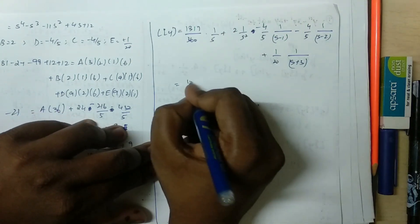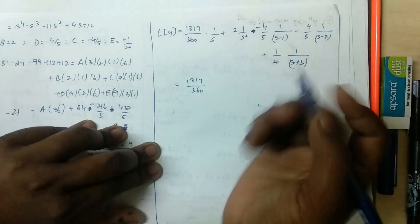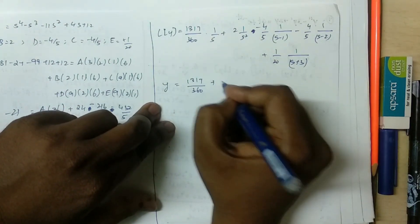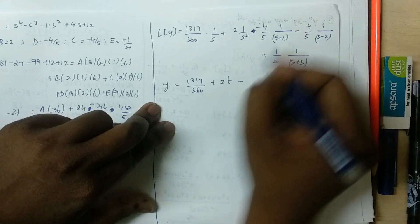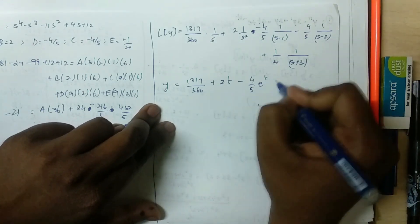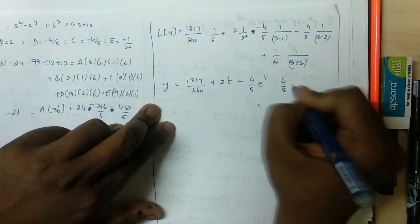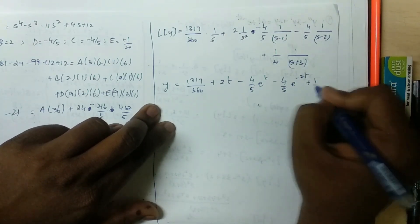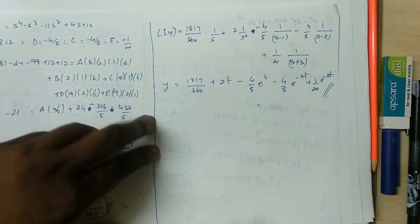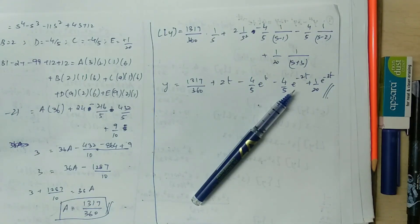The inverse Laplace transform of 1 by s is a constant. The inverse Laplace transform of 1 by s squared is t. Then we have 1 minus e to the power t, e to the power 2t, and e to the power minus 3t. So this is the answer — y equals the final equation. So, finally solved.